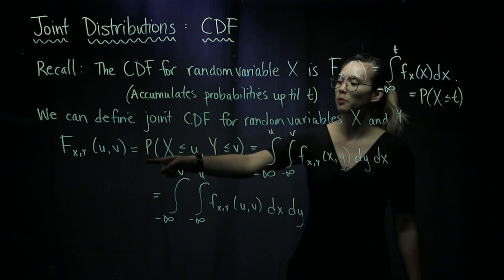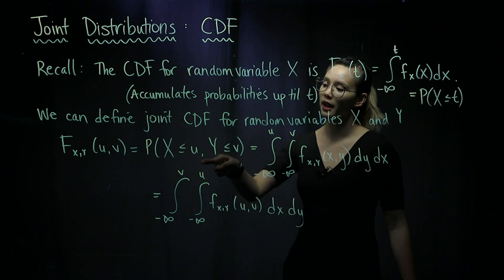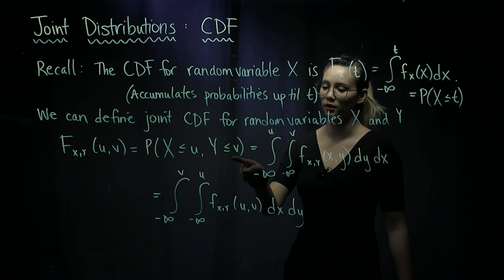In other words, this is saying the probability that X is less than or equal to U, and Y is less than or equal to V.